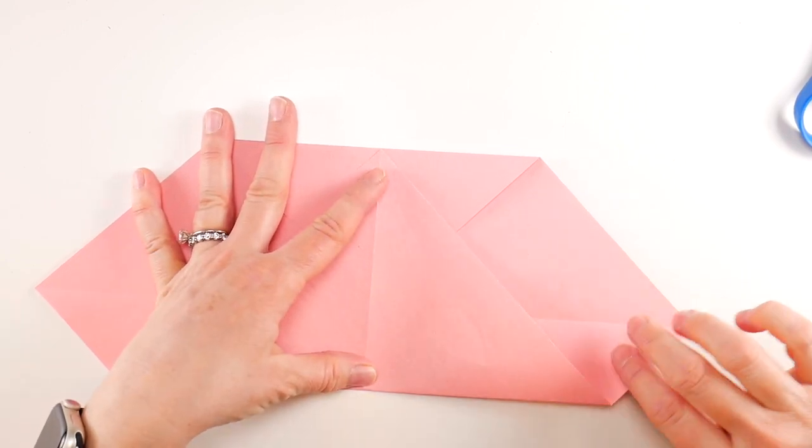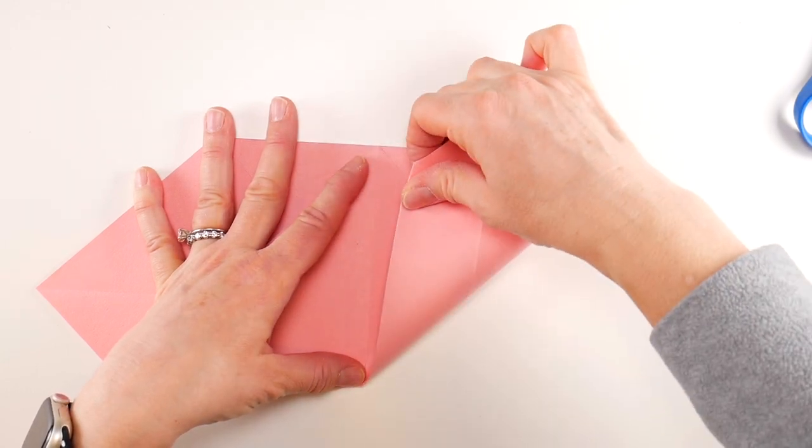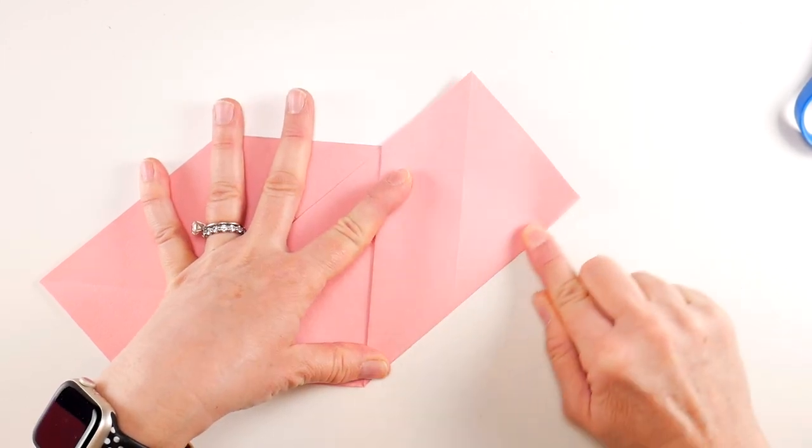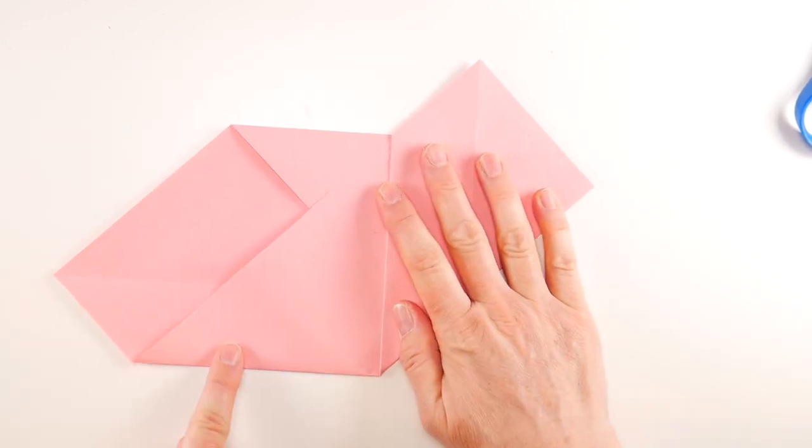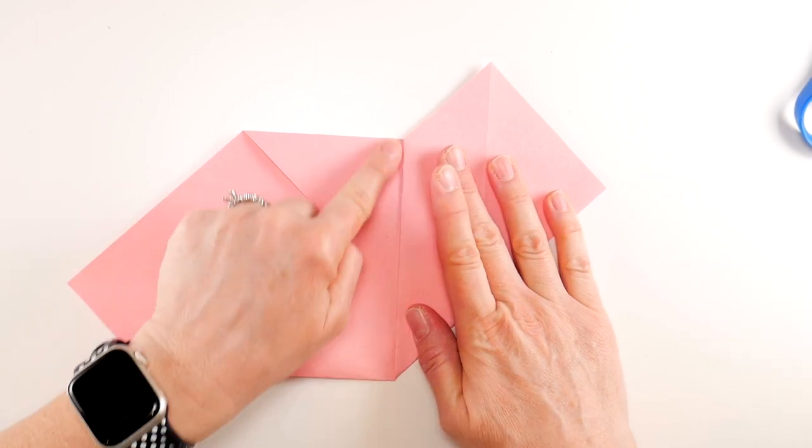You're going to fold it so that this edge matches up with this edge. Fold it just like that. Then do the same on this side. Fold it so that this edge and this edge match. Bring it up and we're just going to crease that as well.